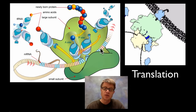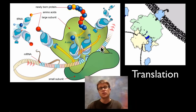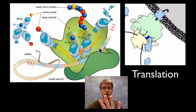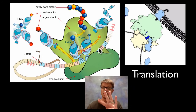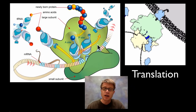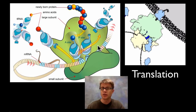Every three letters in the messenger RNA is going to code for one amino acid. And the reason why is since we have four letters in DNA, four letters in RNA — A, T, C and G, or A, U, C and G if we're talking about messenger RNA — every three letters are going to code for one specific amino acid. The reason it's every three letters is it gives us enough variety that we can cover all the amino acids.